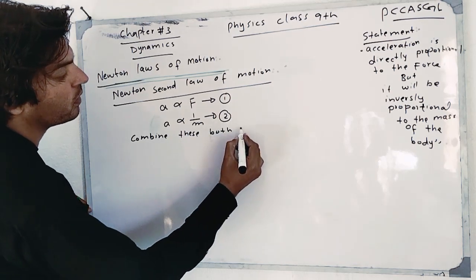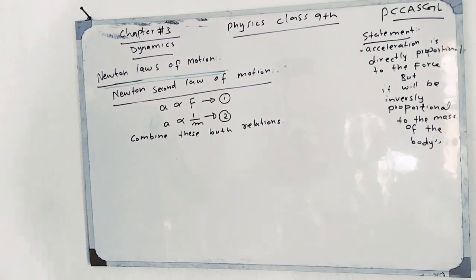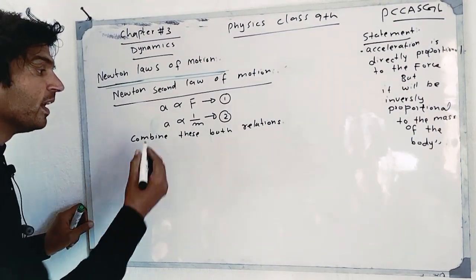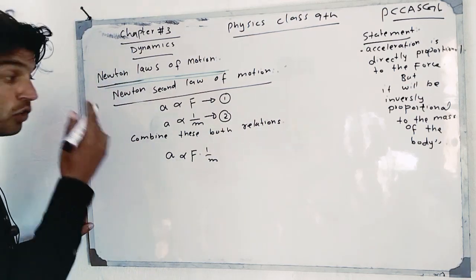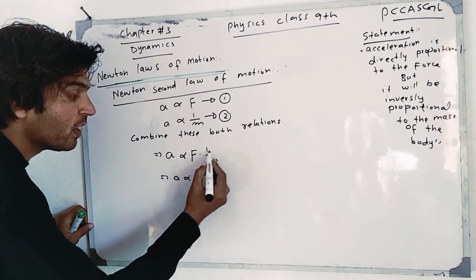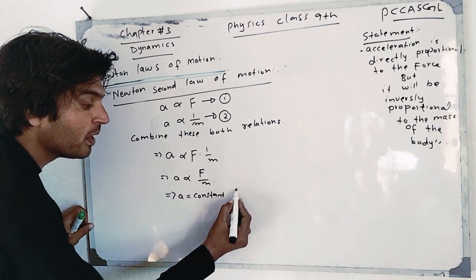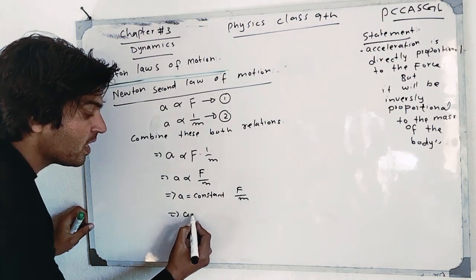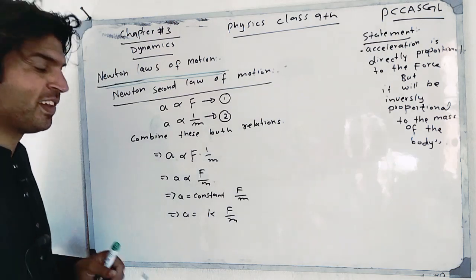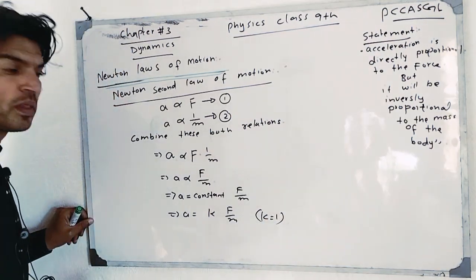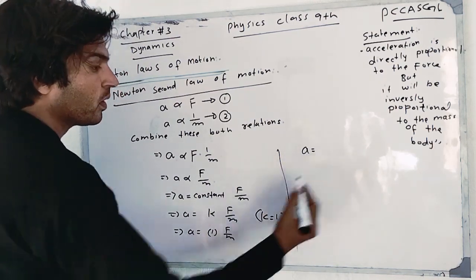Now we combine both relations. Acceleration is directly proportional to force, and inversely proportional to mass. Combining these, acceleration is proportional to F divided by M — that is, a ∝ F/M.